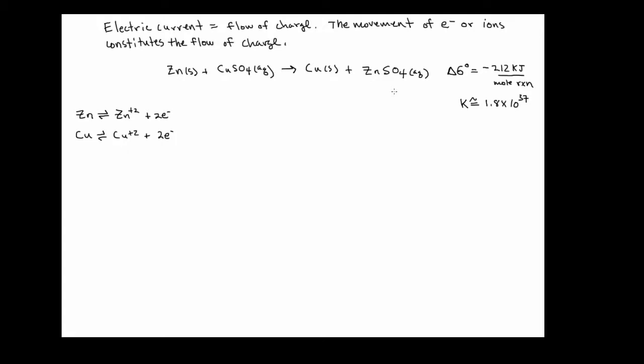Welcome to the ChemDoctor. This is the second video in the series on electrochemistry. To begin, what everyone needs to understand is that electrochemistry has to do with using chemical reactions to generate electrical current. An electrical current is literally the flow of charge, and we can generate flow of charge in a couple of different ways: by moving electrons, and by moving ions.